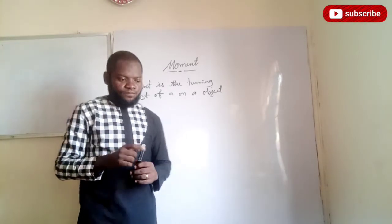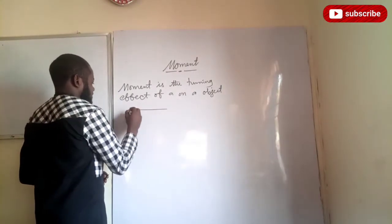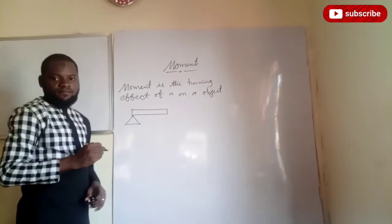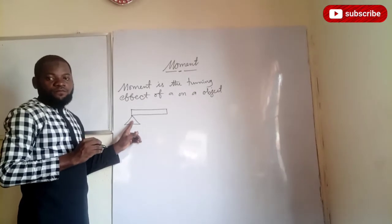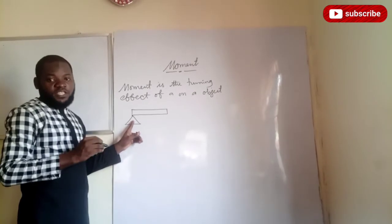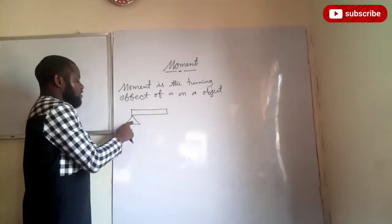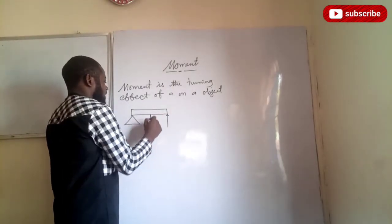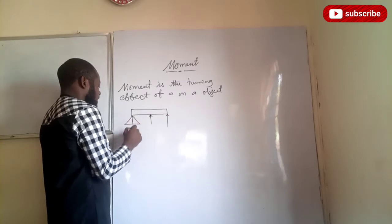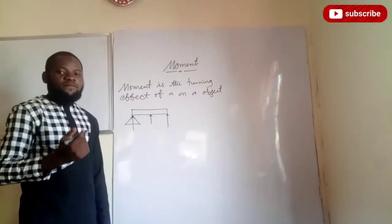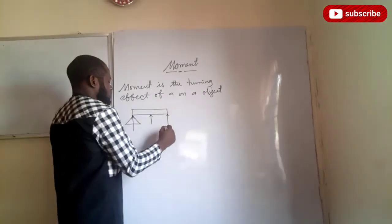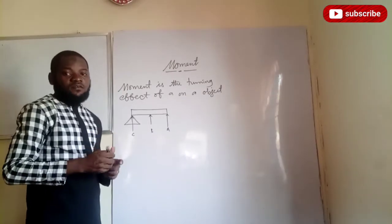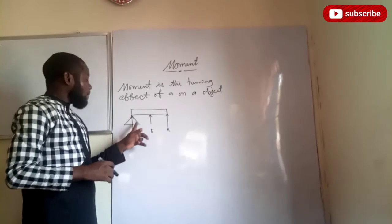Now let's look at something. If I have an object like this, and this object has an axis — you can call it a fulcrum or a point of rotation. For me to know the moment of this body, if I apply a force here, and another force here, and another force here — force A, force B, and force C — which of these forces will be easier to rotate this body about its axis?